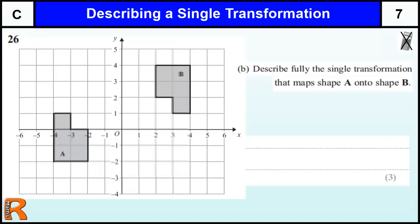Part B: describe the single transformation that maps A onto B. The number of marks available for the question is a clue into what the transformation is.